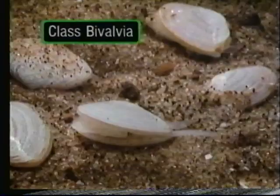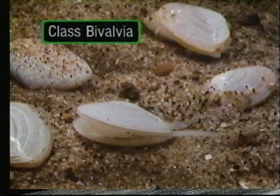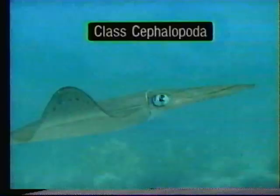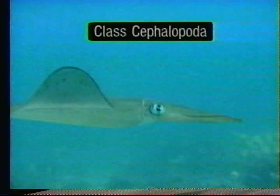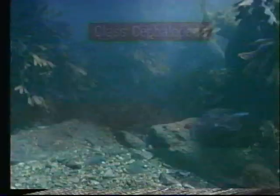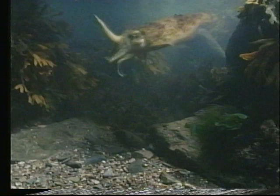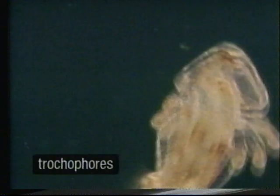Bivalves have a pair of shells hinged in the middle. The foot is usually withdrawn inside the shell. Cephalopods include squid, octopus, and cuttlefish. They have very large heads and a foot divided into eight or ten tentacles, equipped with suckers. Molluscs may be related to annelids; both groups have characteristic swimming larvae called trochophores.